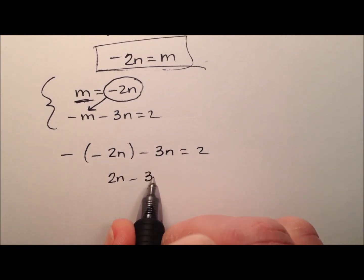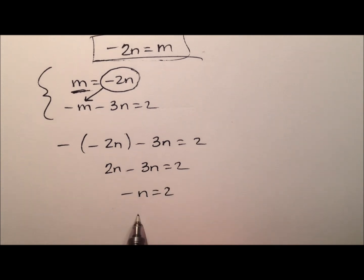So, 2n minus 3n equals 2. So, it looks like n will equal negative 2.